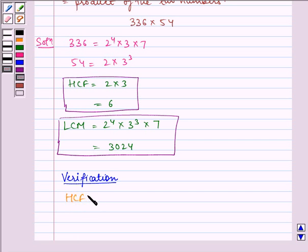Here, HCF into LCM is equal to 6 into 3024 which is equal to 18144.